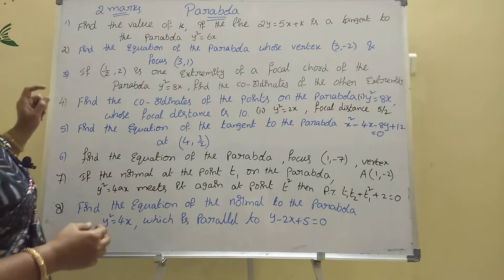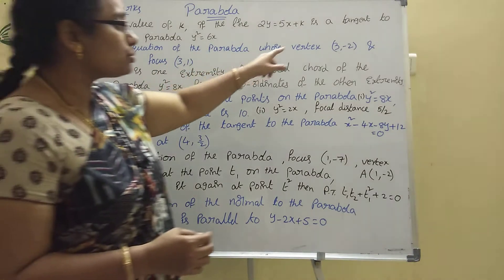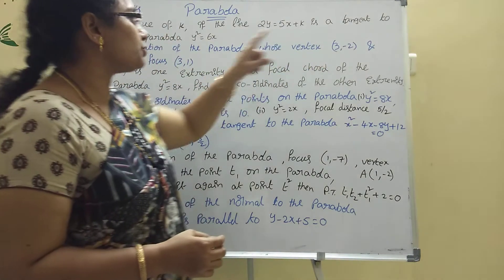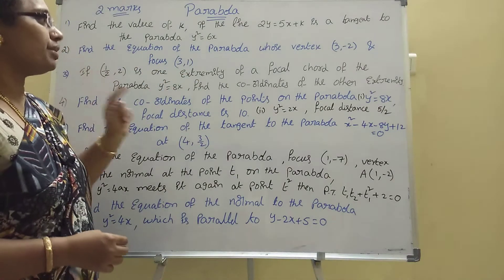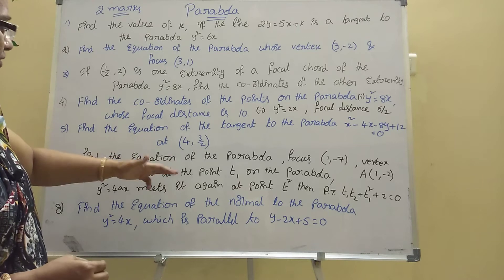Second one: find the equation of the parabola whose vertex, listen here, whose vertex is given at (3, -2) and focus is (3, 1). Similar models with focus and vertex.